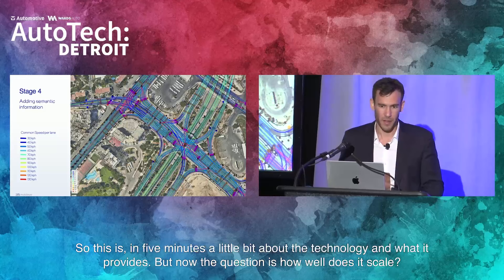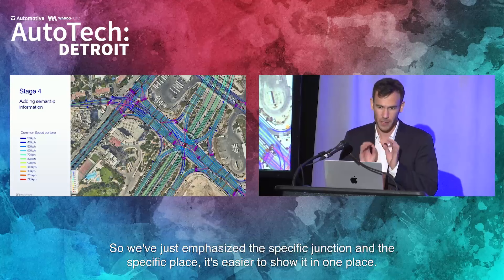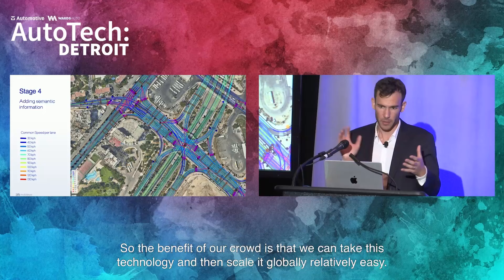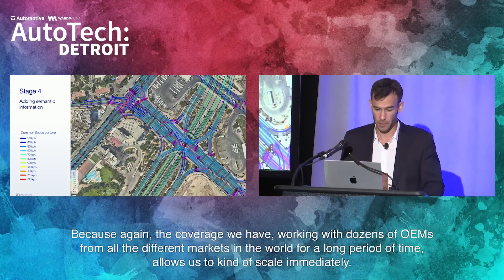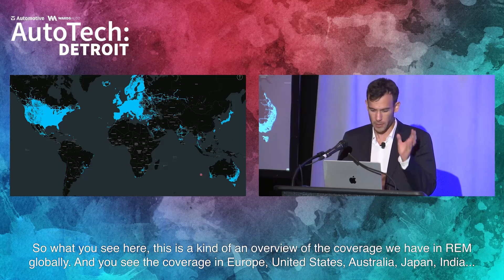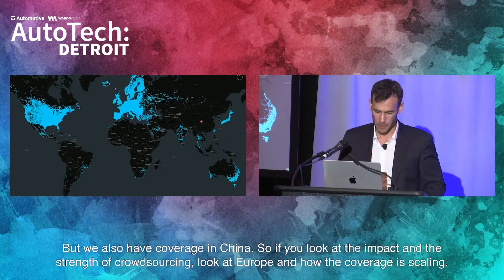The question is how well does it scale. We've just emphasized a specific junction, a specific place — it's easier to show in one place. The benefit of our crowd is that we can take this technology and scale it globally relatively easily, because the coverage we have from working with dozens of OEMs from all different markets in the world for a long period of time allows us to scale immediately. What you see here is an overview of the coverage we have in our map globally — coverage in Europe, the United States, Australia, Japan, India. China is not shown here because of regulatory issues, but we also have coverage in China.